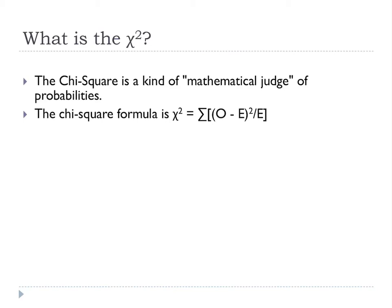In the last video, we talked about the chi-square as a kind of mathematical judge of probabilities, or the likelihood that different ratios of people or events simply happen by chance. We introduced the chi-square formula, in which chi-square is equal to the sum of the squared deviations divided by the expected value — the deviations being observation minus expectation, squared divided by expectation.